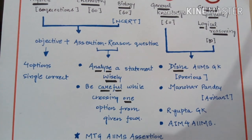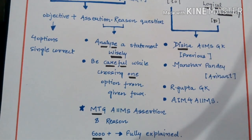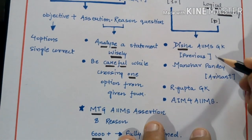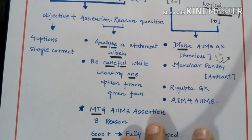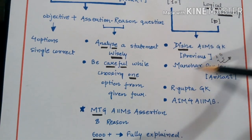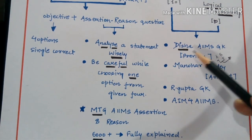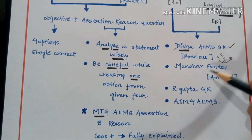Different book options include Disha Publications AIIMS GK. The unique thing about this book is it contains previous year papers from both Section A and Section B — the AIIMS exam is conducted in two shifts, morning and evening — so this book includes both shifts. It will help you analyze what kind of questions were asked in GK and logical reasoning.